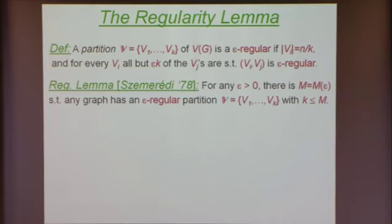Note that I can always partition the graph into singletons — clusters that contain one vertex — so a bipartite graph with one vertex in each side is trivially epsilon-regular. But the whole point is that you want to partition the graph into a bounded number of clusters.